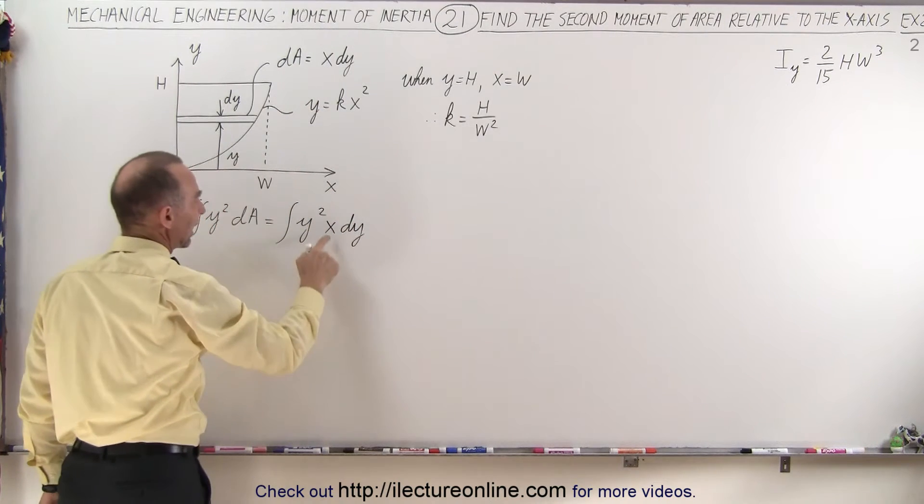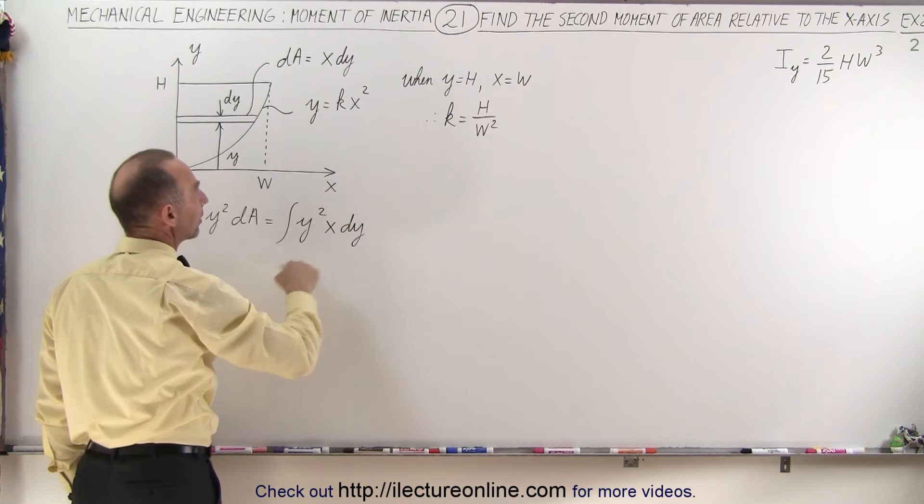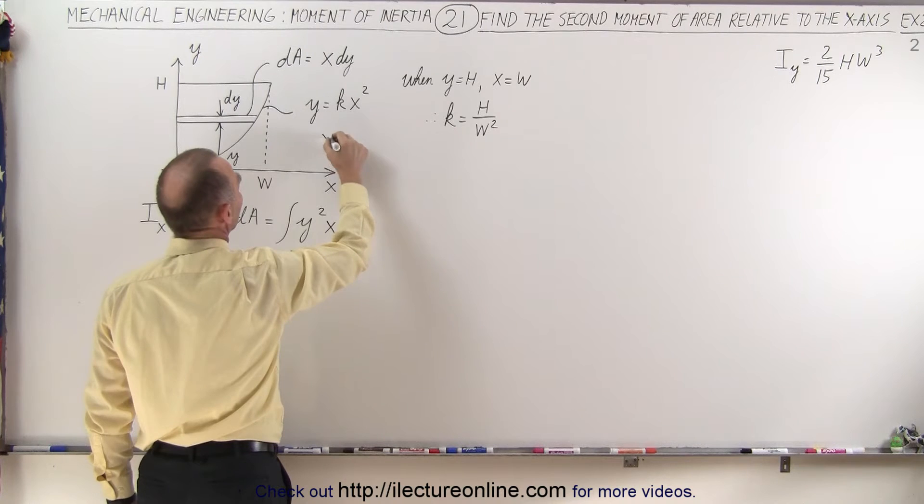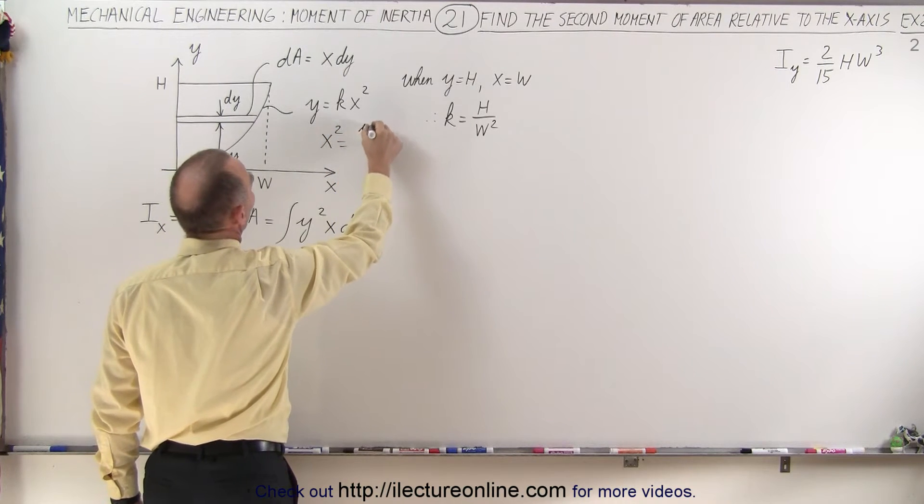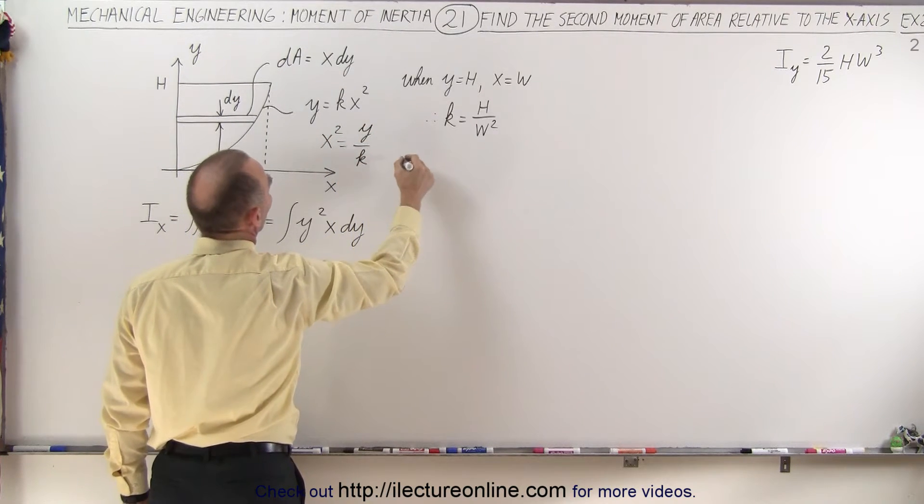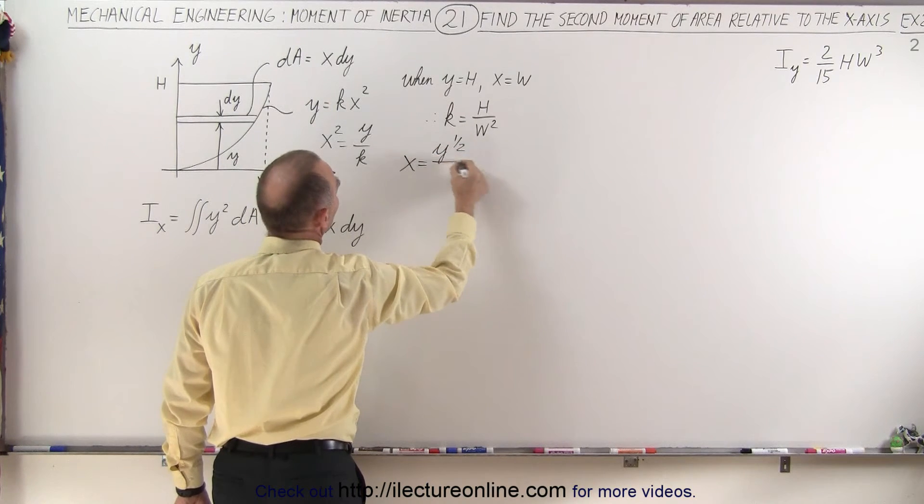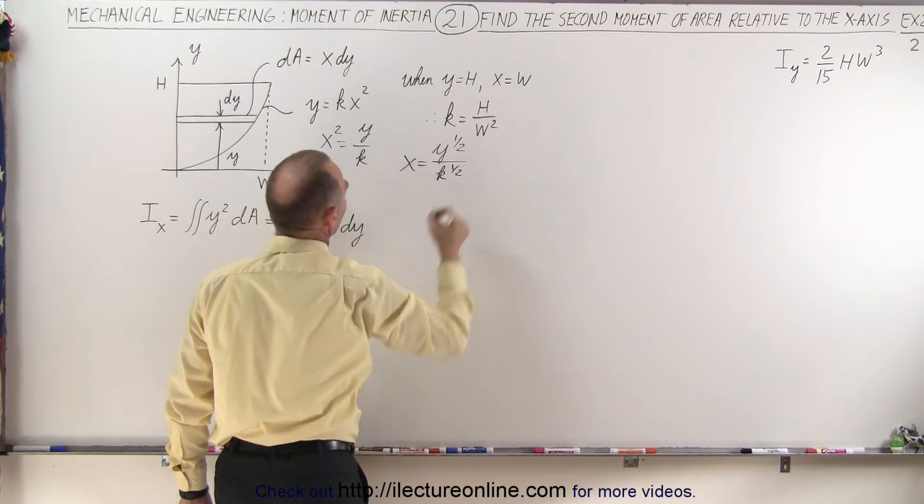And notice, of course, we have an x and a dy there, so we need to get rid of the x. We can solve for x in terms of y and k, so that means that x squared is equal to y divided by k, or x is equal to y to the one-half power divided by k to the one-half power.